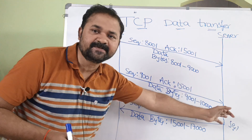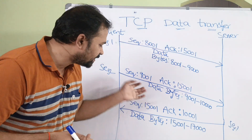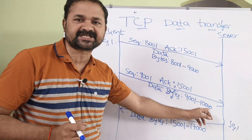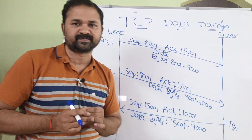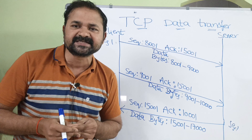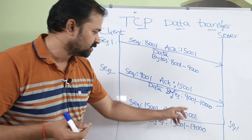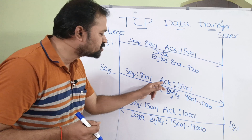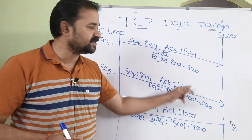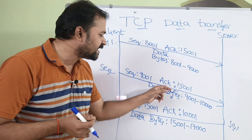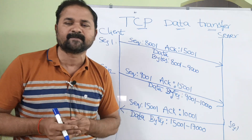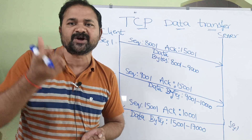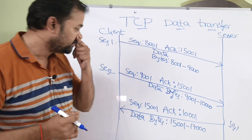Next, the client is sending another segment to the server where the data contains 1000 bytes starting from 9001 to 10000. The sequence number is the first byte, which is 9001. The acknowledgement is also 15001, just like segment 1, specifying that the client is still expecting a segment from the server where the starting byte is 15001.